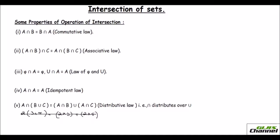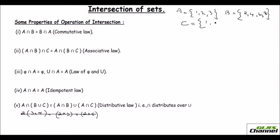Now I just proved this with a small example. I take A as {1, 2, 3}, B as {2, 4, 6, 8}, and C as {1, 3, 5, 7, 8}. Let me show you how the commutative law is true and how it works.